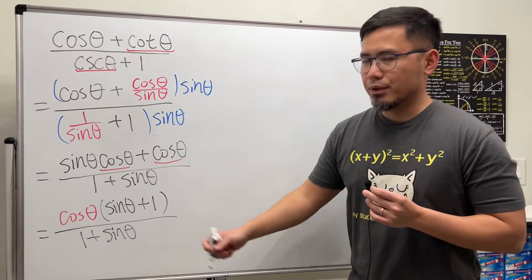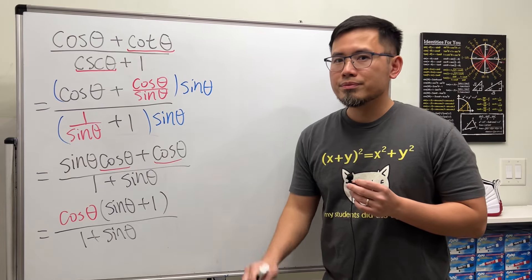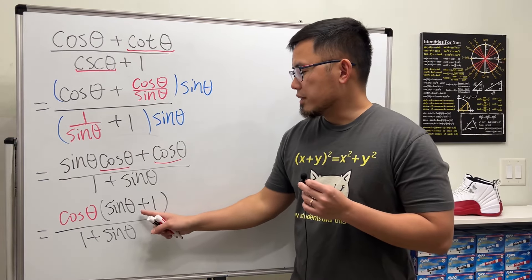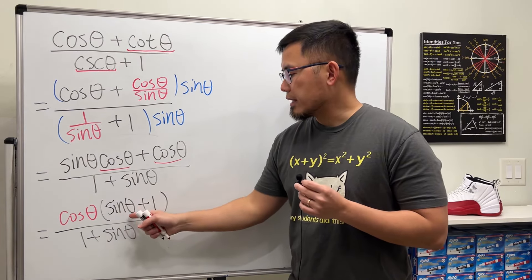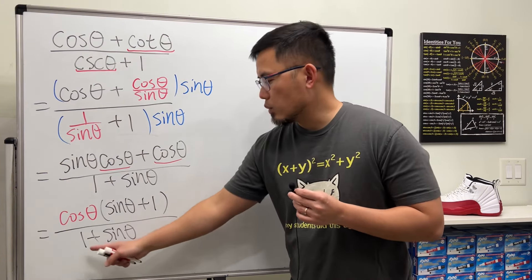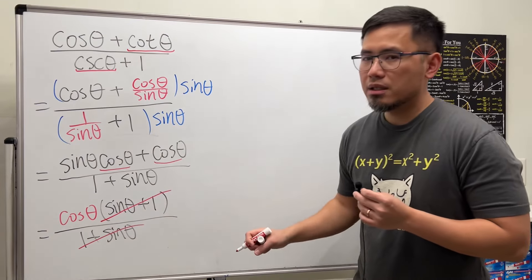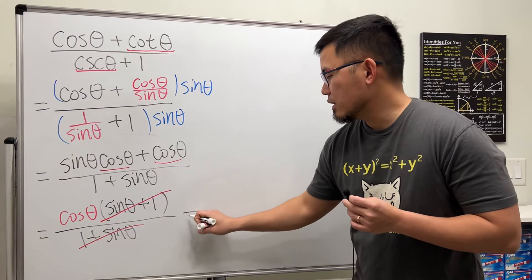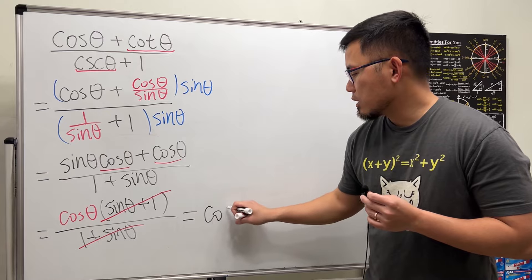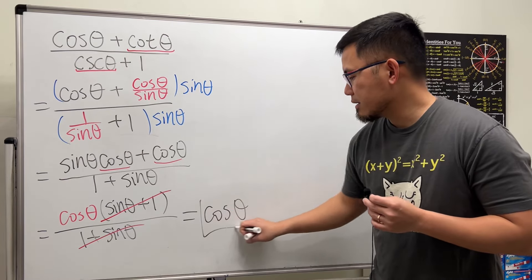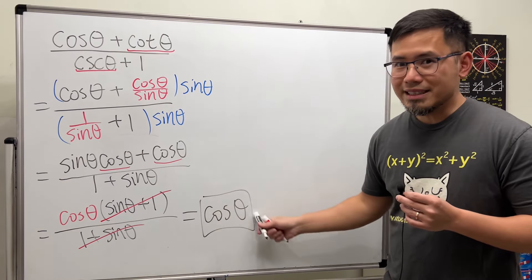And now have a look, is there anything that we can do? Yes. The order of addition doesn't matter. So sine theta plus 1 is in fact the same as 1 plus sine theta. Therefore, we can cancel this and that completely. And as we can see, we're left with cosine theta. And that's it.